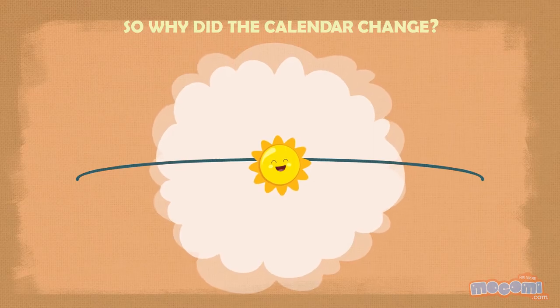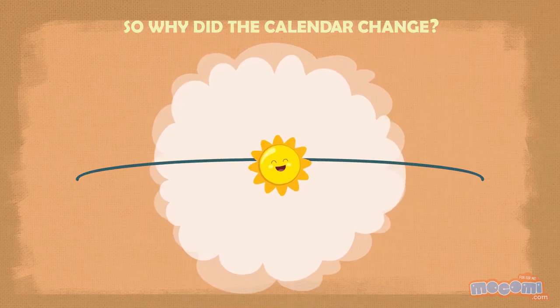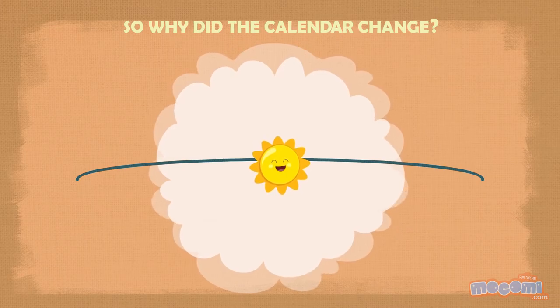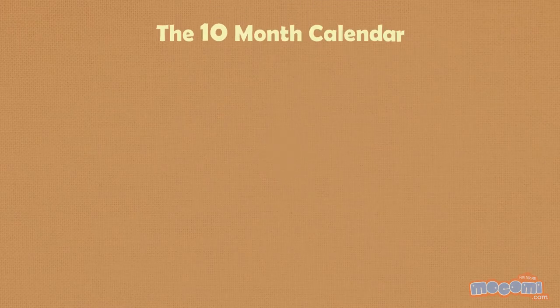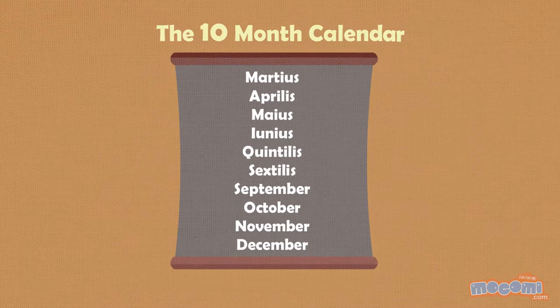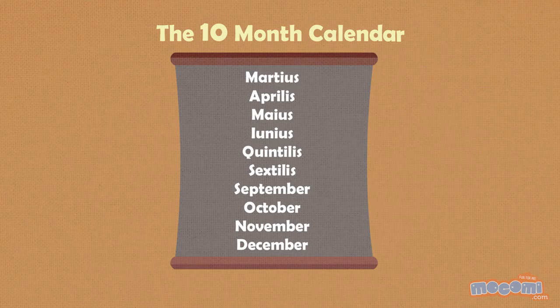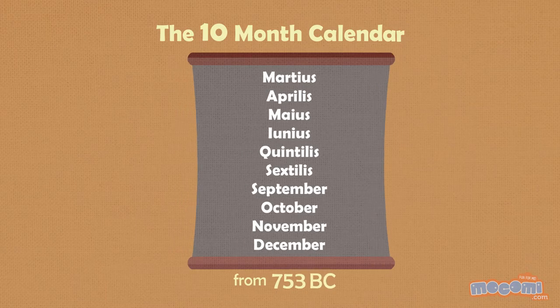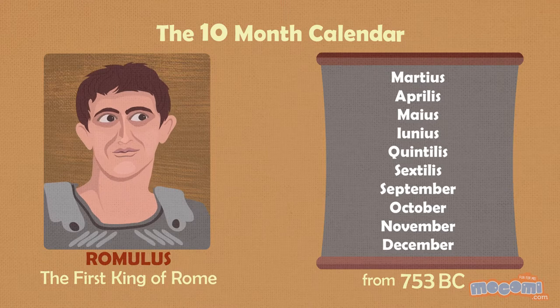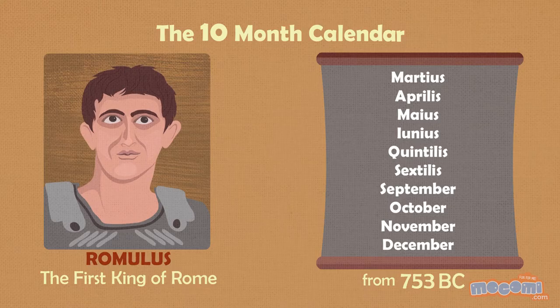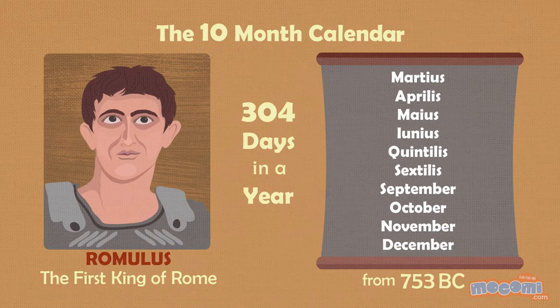So why did the calendar change? The calendar used previously consisted of 10 months but it couldn't account for the cyclic revolution of the earth around the sun which takes exactly 365.2422 days. The previous Roman calendar began the year in March and ended it in December. It has been in use from 753 BC by Romulus the legendary first king of Rome.